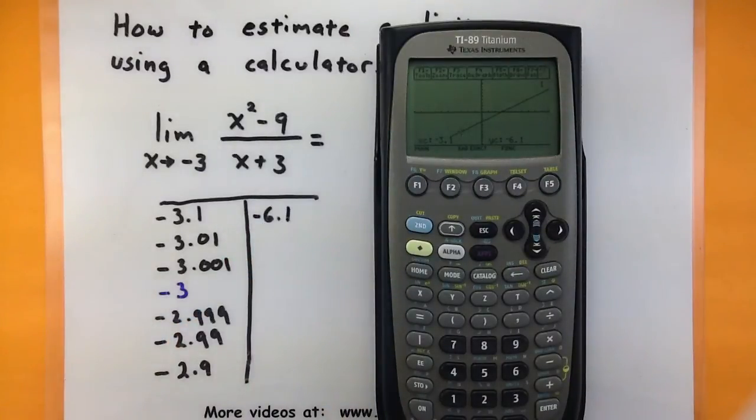Now I can repeat this process for the next value in my table. So math, value, negative 3.01, enter.